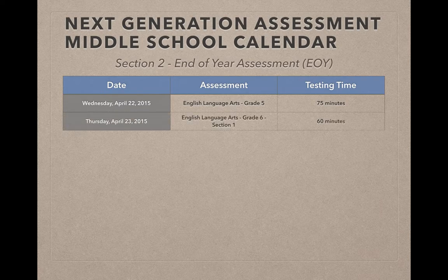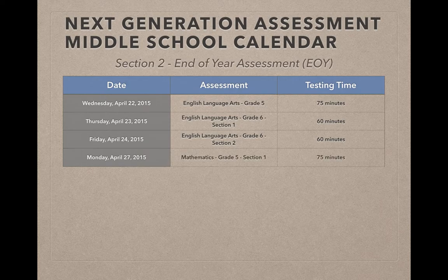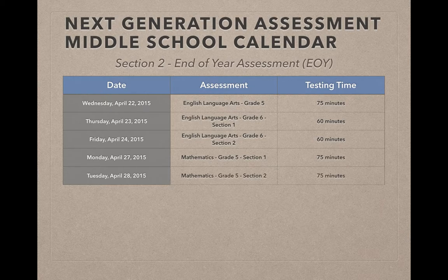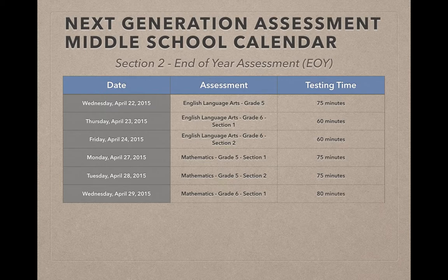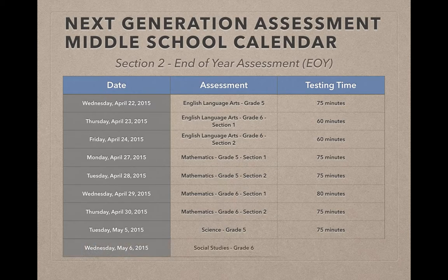For Grade 6, Language Arts will be in two sections: Thursday April 23rd and Friday April 24th. Then we'll come back from the weekend and get into Math Grade 5 on April 27th and April 28th Section 2. Wednesday April 29th will be Grade 6 Math, as will Thursday April 30th. Tuesday May 5th will be Science Grade 5, and Wednesday May 6th will be Social Studies Grade 6.